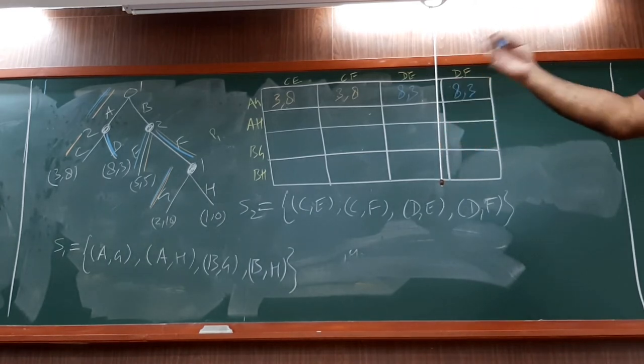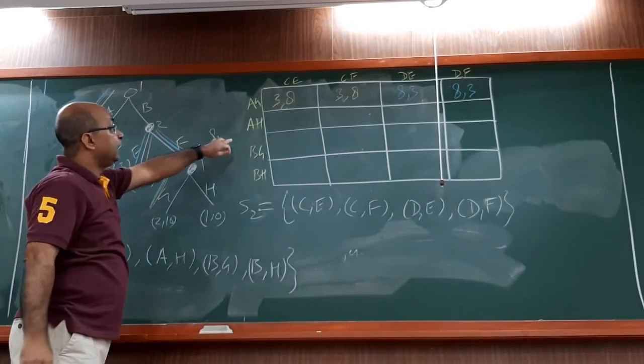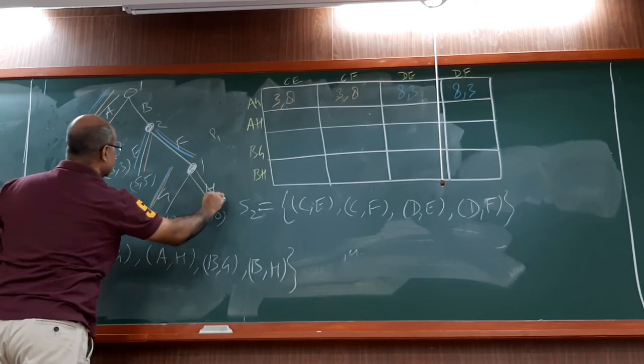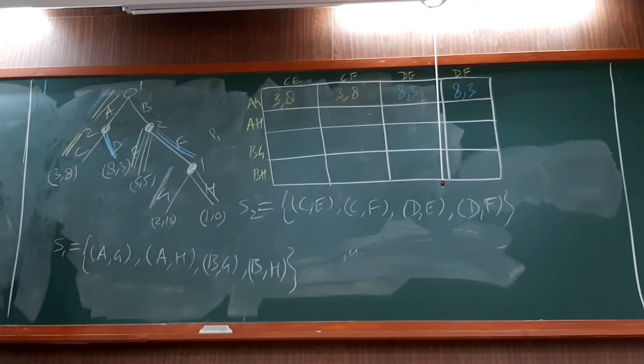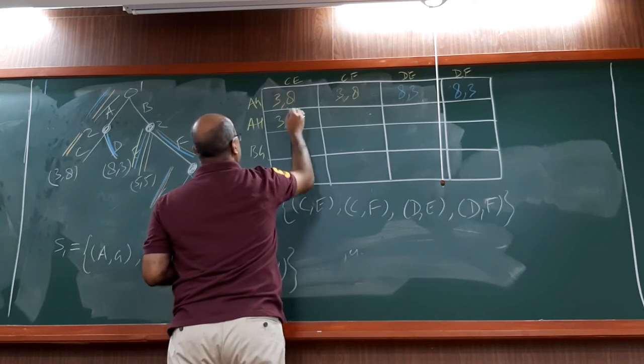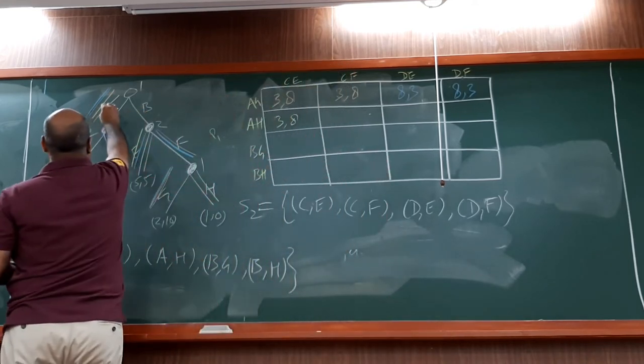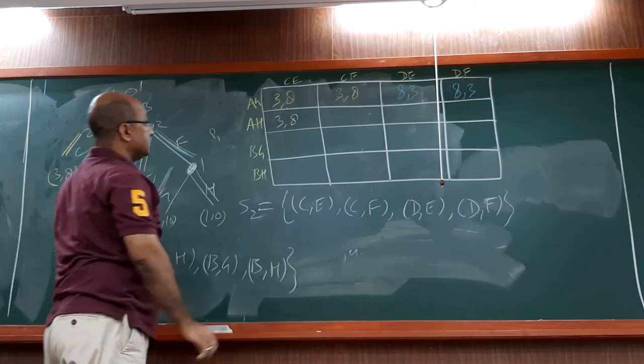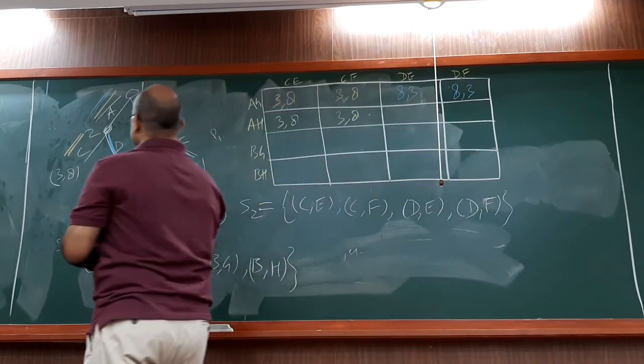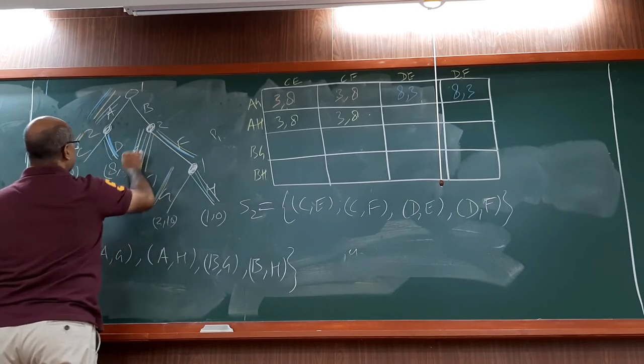Are you noticing a strange thing? In our normal matrix initially that we saw, each payoff was coming once. But the same payoff is being entered here multiple times. Why? Because this represents all the complete paths that can happen in that game.